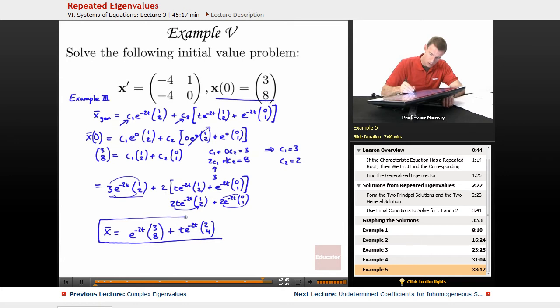By the way, notice that it's very easy to check now. If I plugged in t equals 0, the right hand side would all go to 0, and the left hand term would give me (3, 8). So, that's what it was supposed to be. So, I can check that I've got it right. That's very easy.